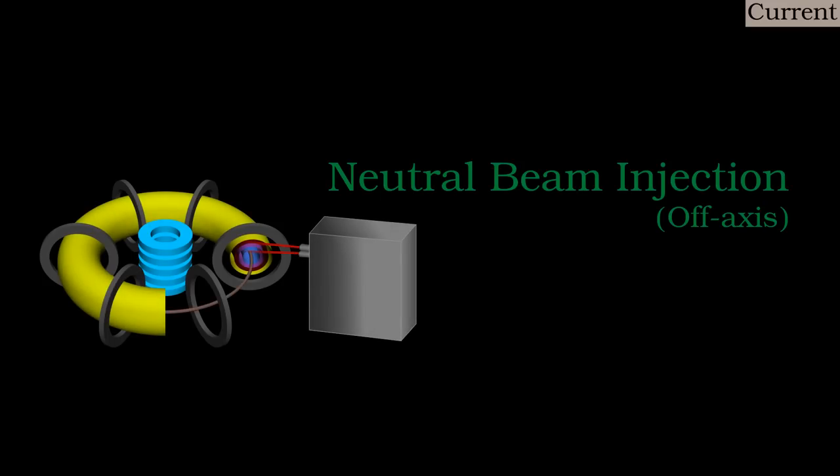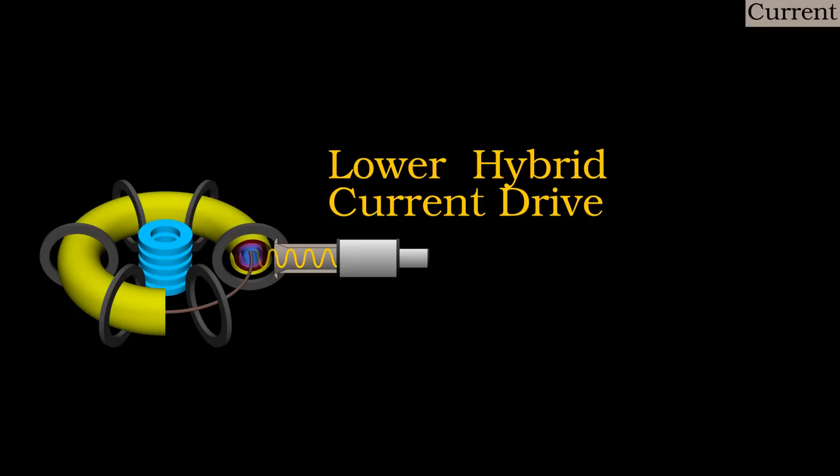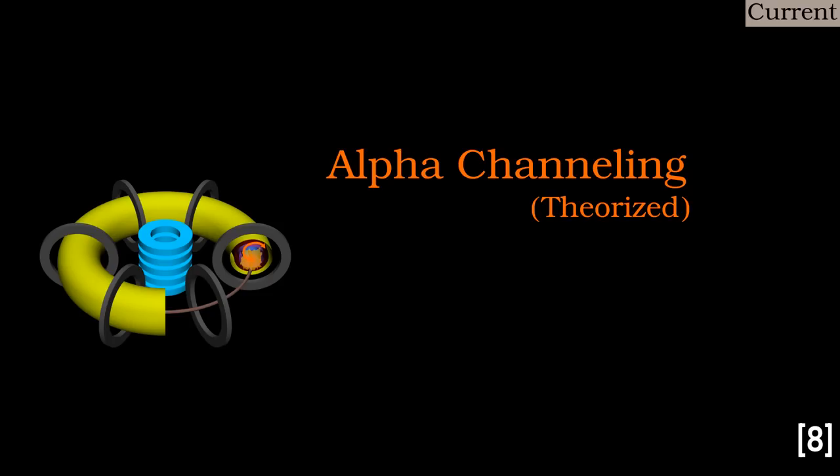Fortunately, the other methods of heating the plasma can also be used to drive a current through it. If the neutral beams come in at an angle to the torus, there will be a resulting flow of charge, an electrical current. This is a typical setup on high performance tokamaks. Electromagnetic waves can also drive currents. The lower hybrid resonance is particularly good at making electrons flow around the torus, so many tokamaks have microwave systems for lower hybrid current drive. There have been some proposals to enable the helium-4 fusion products to also induce current, but they are as yet totally unproven.